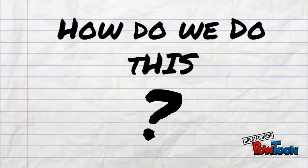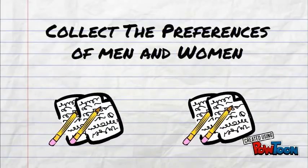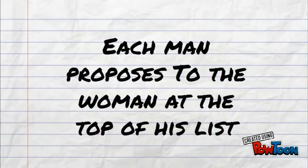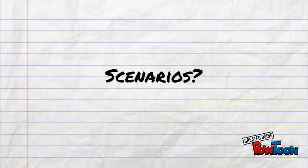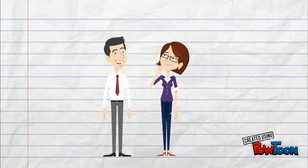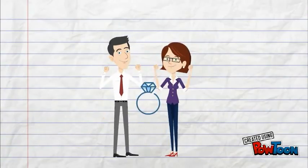How are we going to do this? Step 1: Collect the preferences of men and women. Step 2: Each man proposes to the woman at the top of his list. Now, three possible scenarios could occur. Step 3, One: she is unengaged and she accepts his proposal.